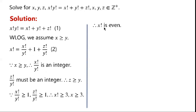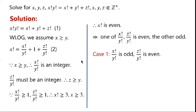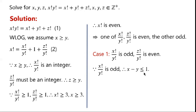So x factorial is even, which implies one of x factorial over y factorial or z factorial over y factorial must be even, and the other must be odd. This can be seen from equation 2. Case 1: x factorial over y factorial is odd, and z factorial over y factorial is even. Because x factorial over y factorial is odd, so x minus y factorial is odd, so x minus y is less than or equal to 1.